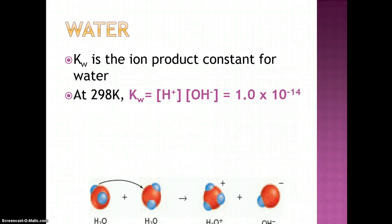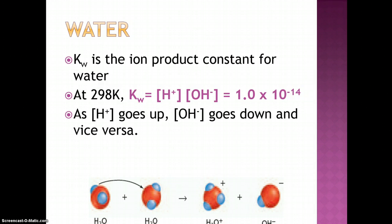Experiments show that in pure water at 298 Kelvin, the hydrogen and hydroxide ion concentrations are both equal to 1.0 times 10 to the negative 7th. Therefore, at 298 Kelvin, the value of Kw is 1 times 10 to the negative 14th.